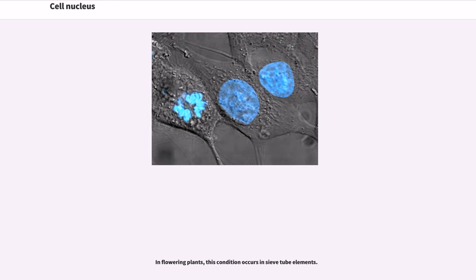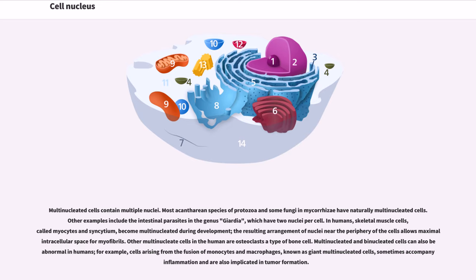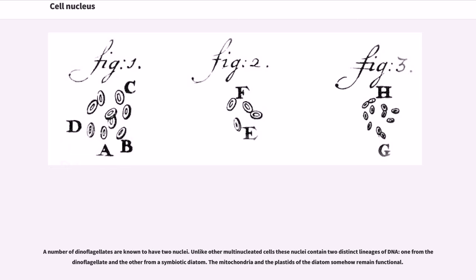In flowering plants, this condition occurs in sieve tube elements. Multinucleated cells contain multiple nuclei. Most acantharean species of protozoa and some fungi in mycorrhizae have naturally multinucleated cells. Other examples include the intestinal parasites in the genus Giardia, which have two nuclei per cell. In humans, skeletal muscle cells, called myocytes or syncytium, become multinucleated during development. The resulting arrangement of nuclei near the periphery of the cells allows maximal intracellular space for myofibrils. Other multinucleate cells in the human are osteoclasts, a type of bone cell. Multinucleated and binucleated cells can also be abnormal in humans, for example, cells arising from the fusion of monocytes and macrophages, known as giant multinucleated cells, sometimes accompany inflammation and are also implicated in tumor formation. A number of dinoflagellates are known to have two nuclei. Unlike other multinucleated cells these nuclei contain two distinct lineages of DNA, one from the dinoflagellate and the other from a symbiotic diatom. The mitochondria and the plastids of the diatom somehow remain functional.